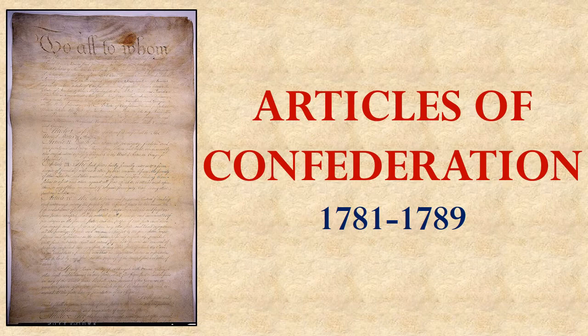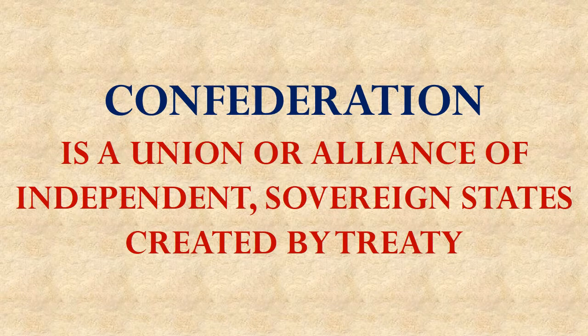But in what way did it bind them together? That word Confederation, used in the title Articles of Confederation, means a union or an alliance of independent sovereign states that's created by a treaty. So this is another indication that, to start out with, after the Revolution, these 13 states were separate independent countries trying to loosely work together with each other under the Articles of Confederation.